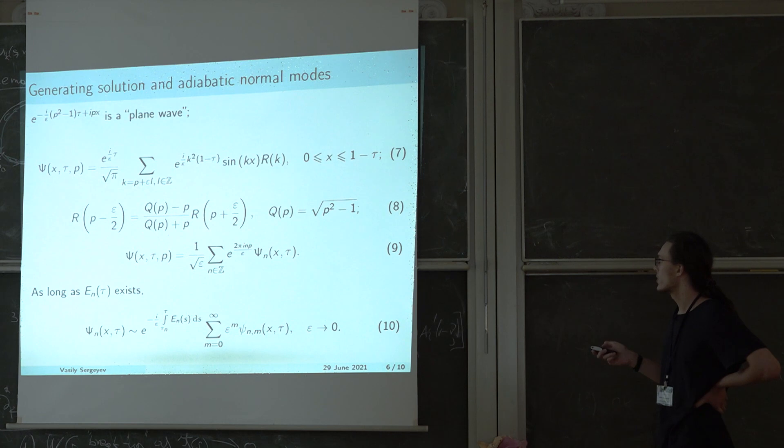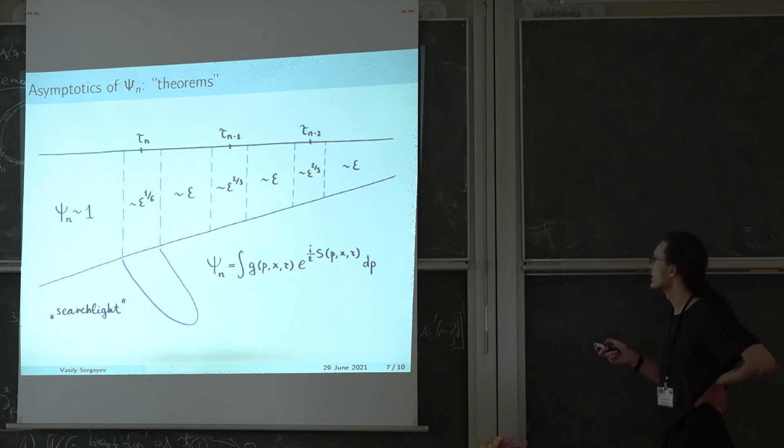So let's talk a little bit more about the asymptotics of the n-th adiabatic normal mode in the half plane where our problem is set. Before the critical moment, this solution is of the order of one over epsilon, inside the potential well. And outside of it, it decreases exponentially. So the quantum particle, which is described by this solution, is localized within the potential well.